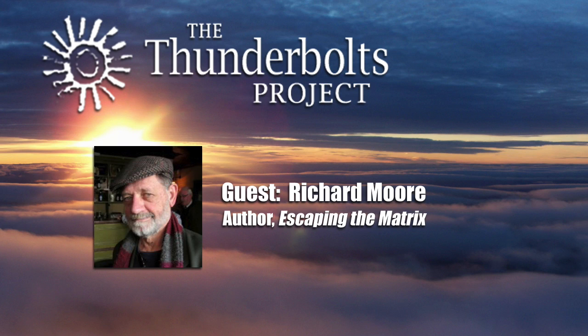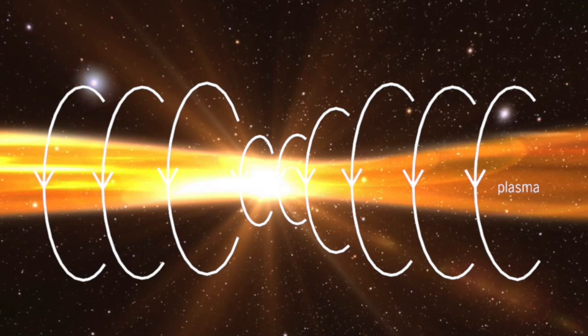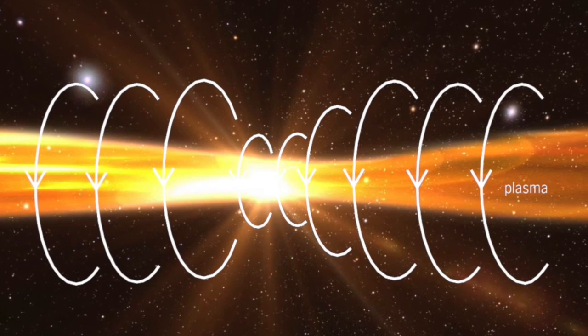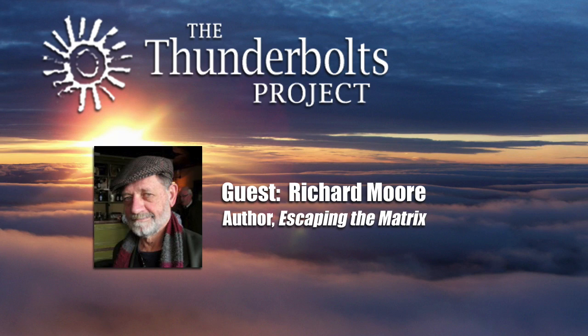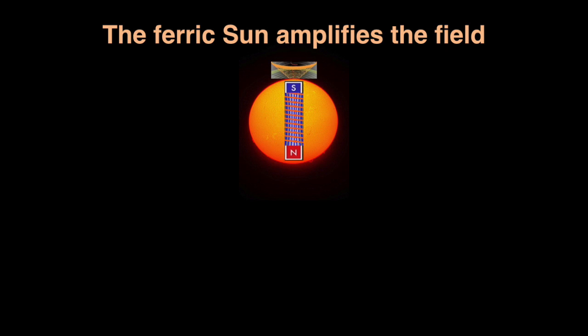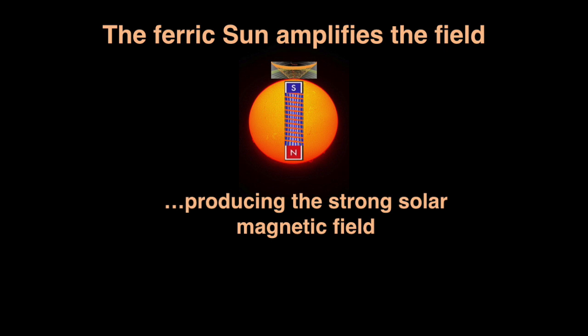So that smaller field is then acting on the sun, and the sun being, it's going to have a lot of iron in it because stars are created in Z pinches, and that's where the heaviest ions are concentrated. So that field coming in from the Birkeland current, the net field of the two currents, is going to be amplified by the ferric sun, just the way when you put an iron rod in a solenoid, then suddenly you've got a strong magnetic field. Without the iron rod, you don't.